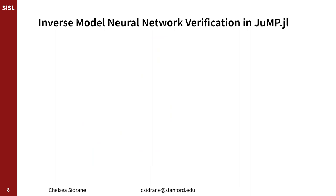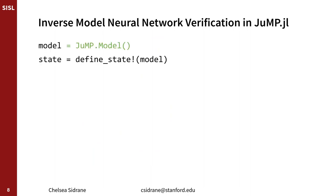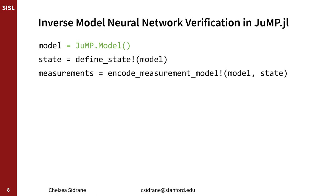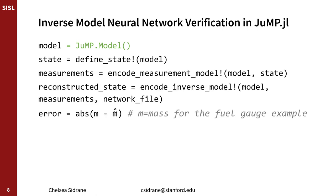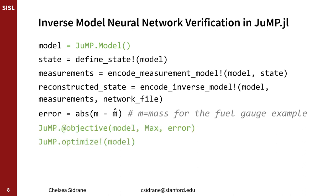In JuMP, this looks like: we first define a model, then define state variables, encode the measurement model and the inverse model. Then we define the error, set it as our objective, and maximize it.